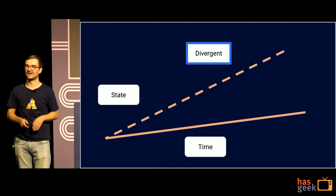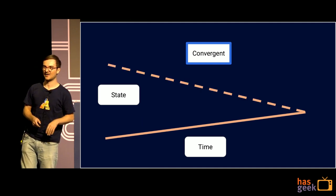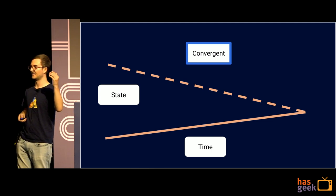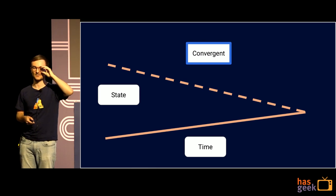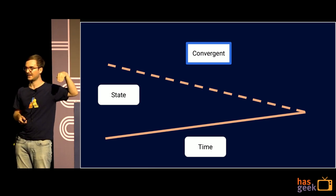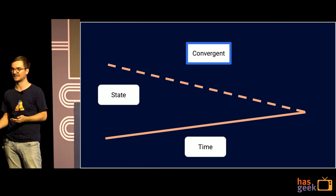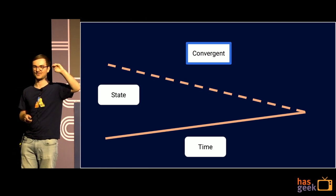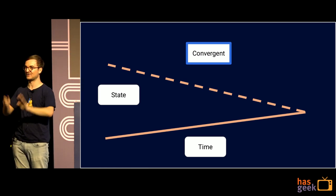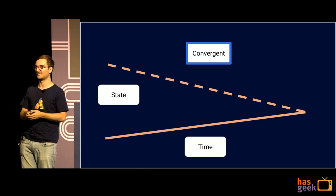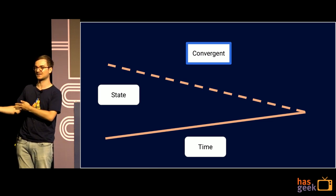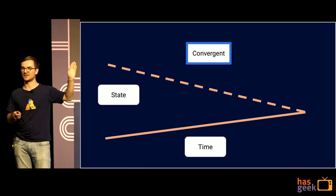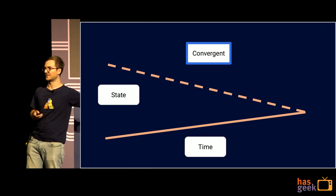Tools like Puppet and Chef came up to try and make it so you can take some sort of existing state and converge it towards some sort of intended state. Over time, if you give it sufficient time, you can say that you want a package to be absent and now across all your systems you know that package is not installed. It's an ability to say you don't want a certain state and you do want this state. You can apply this to different systems and try to take a current unknown state into a known state.